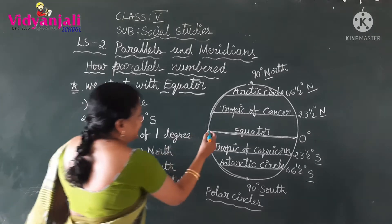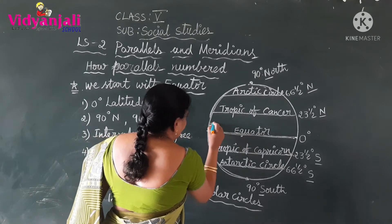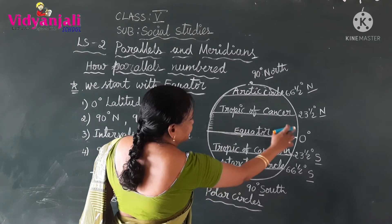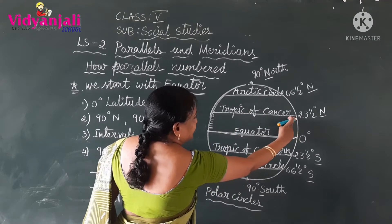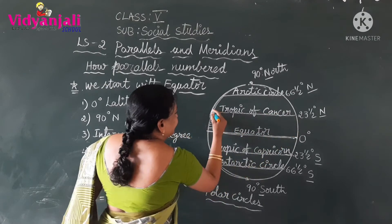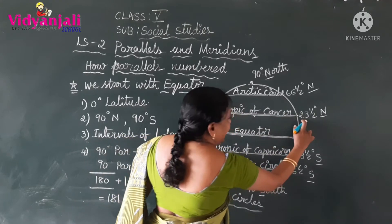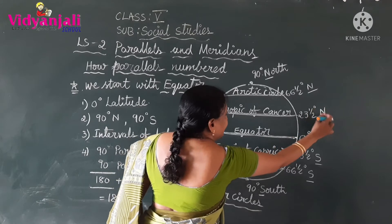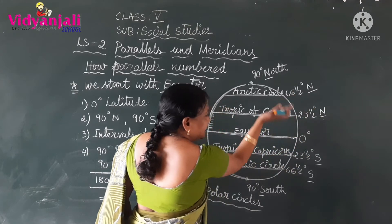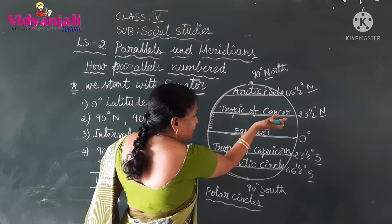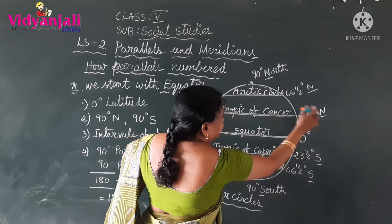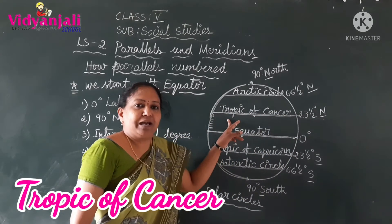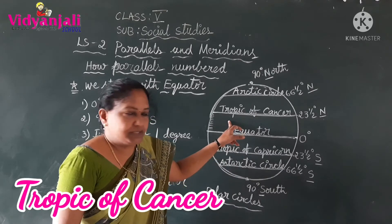Now, counting up from the equator — 1, 2, 3... up to 23 — at 23 and a half degrees there is a special mark. This line at 23 and a half degrees is located in the northern part of the globe. This line is known as the Tropic of Cancer.